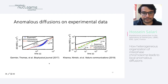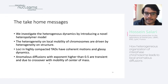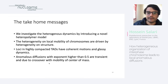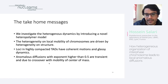The take-home messages are: we investigate heterogeneous dynamics by introducing a novel heteropolymer model, and we find that heterogeneity in local mobility of chromosomes is driven by heterogeneity in structure. We also find that loci in highly compacted TADs have coherent motion and glassy dynamics. Finally, anomalous diffusion with exponent higher than 0.5 — which was very interesting and strange — is transient, due to the crossover of mobility to center-of-mass motion.